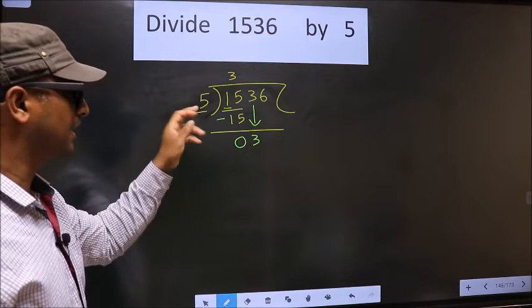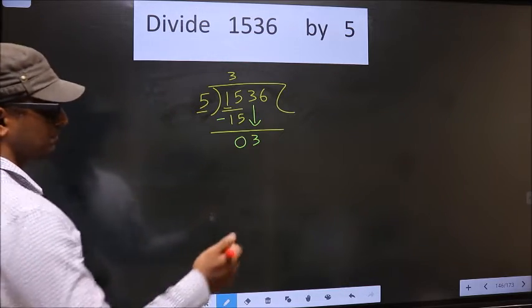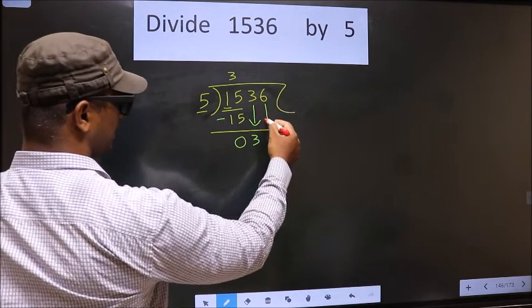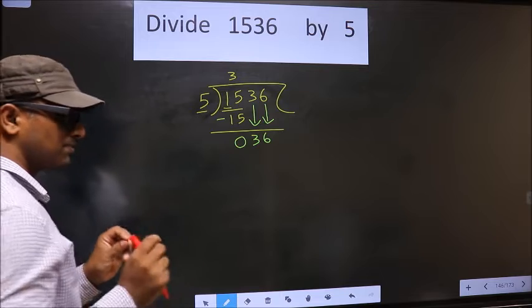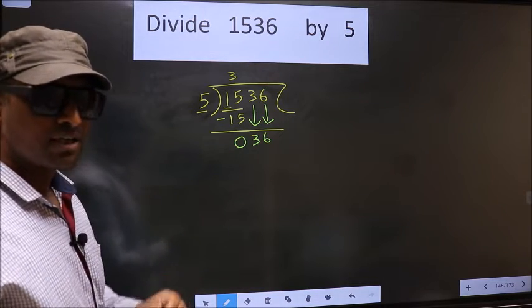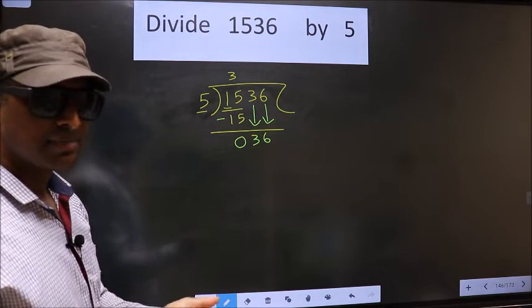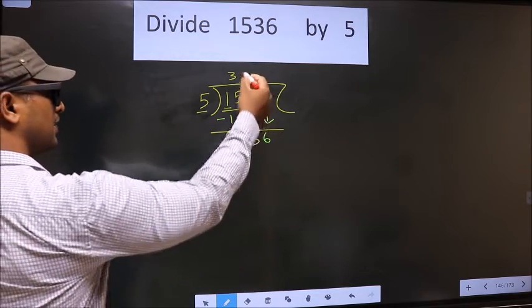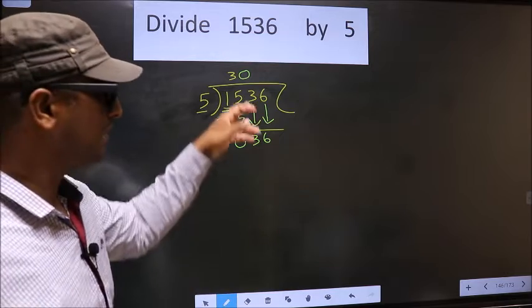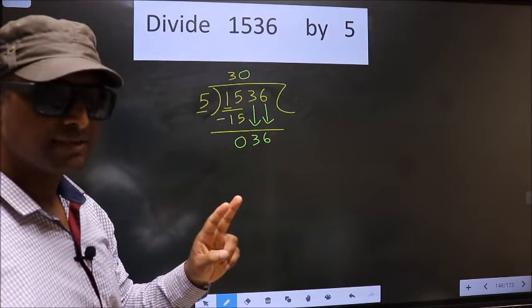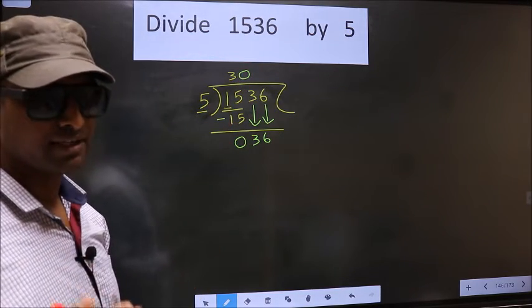Here we have 3. Here 5. 3 is smaller than 5. So what many do is, they directly bring down the other number, that is 6 down. Over here, you should remember this point. Whenever you are bringing down two numbers, two numbers at the same step, then compulsory put 0 in the quotient. I repeat. Whenever you are bringing down two numbers at the same step, compulsory put 0 in the quotient. Remember this point.